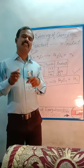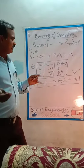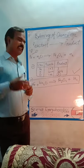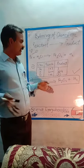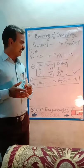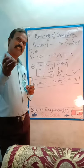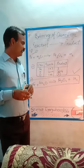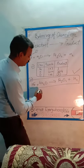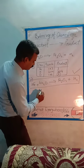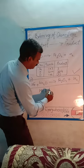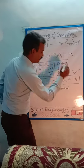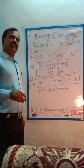For Class 10th, there are various methods to balance chemical equations. The method we have used here is called the hit and trial method for balancing chemical reactions.